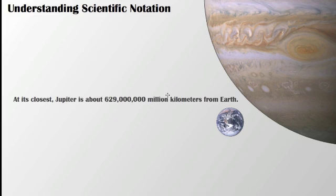So, taking a look at its closest, Jupiter is about 629 million kilometers from Earth. That's a long distance. That's a large number.